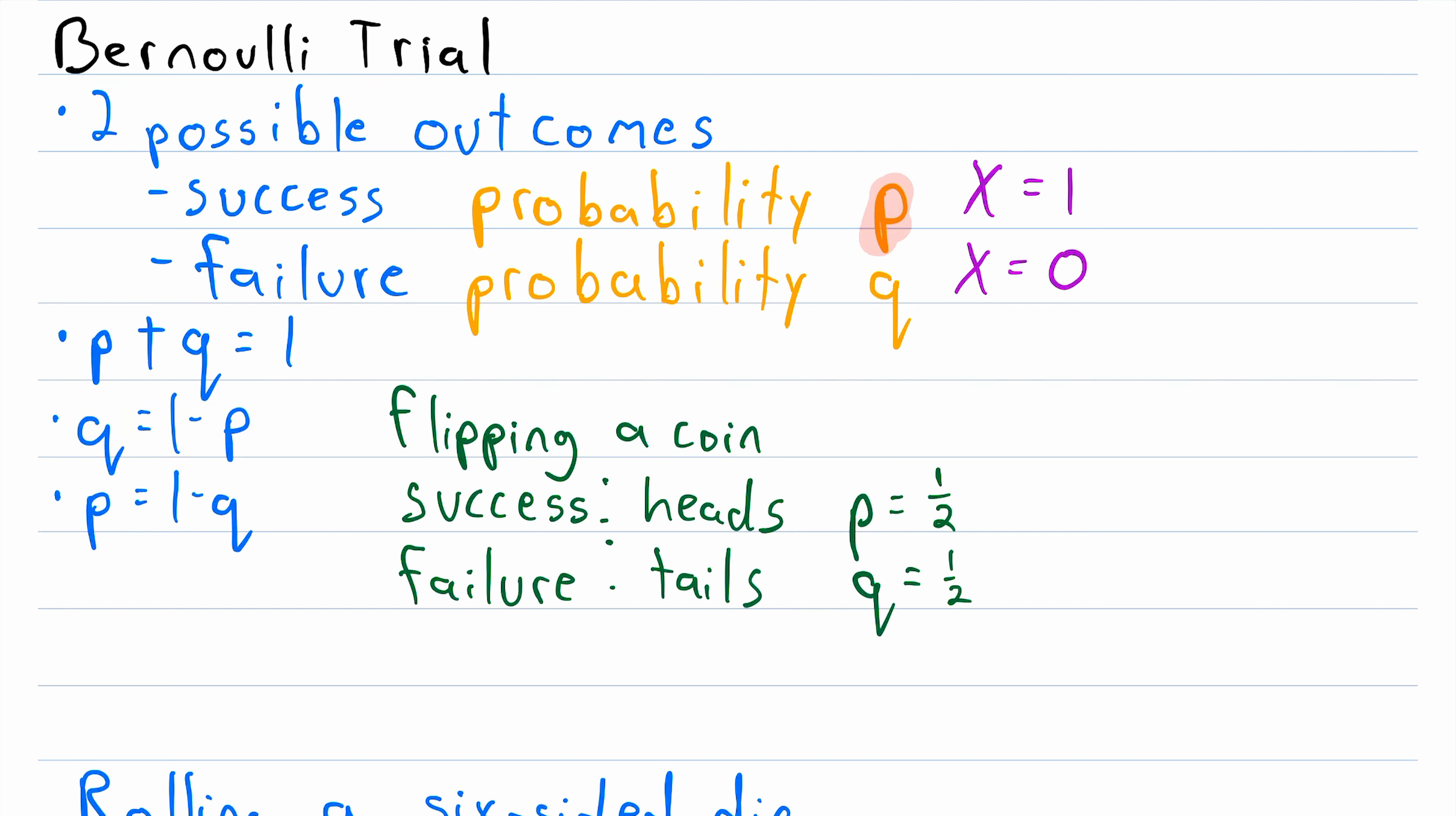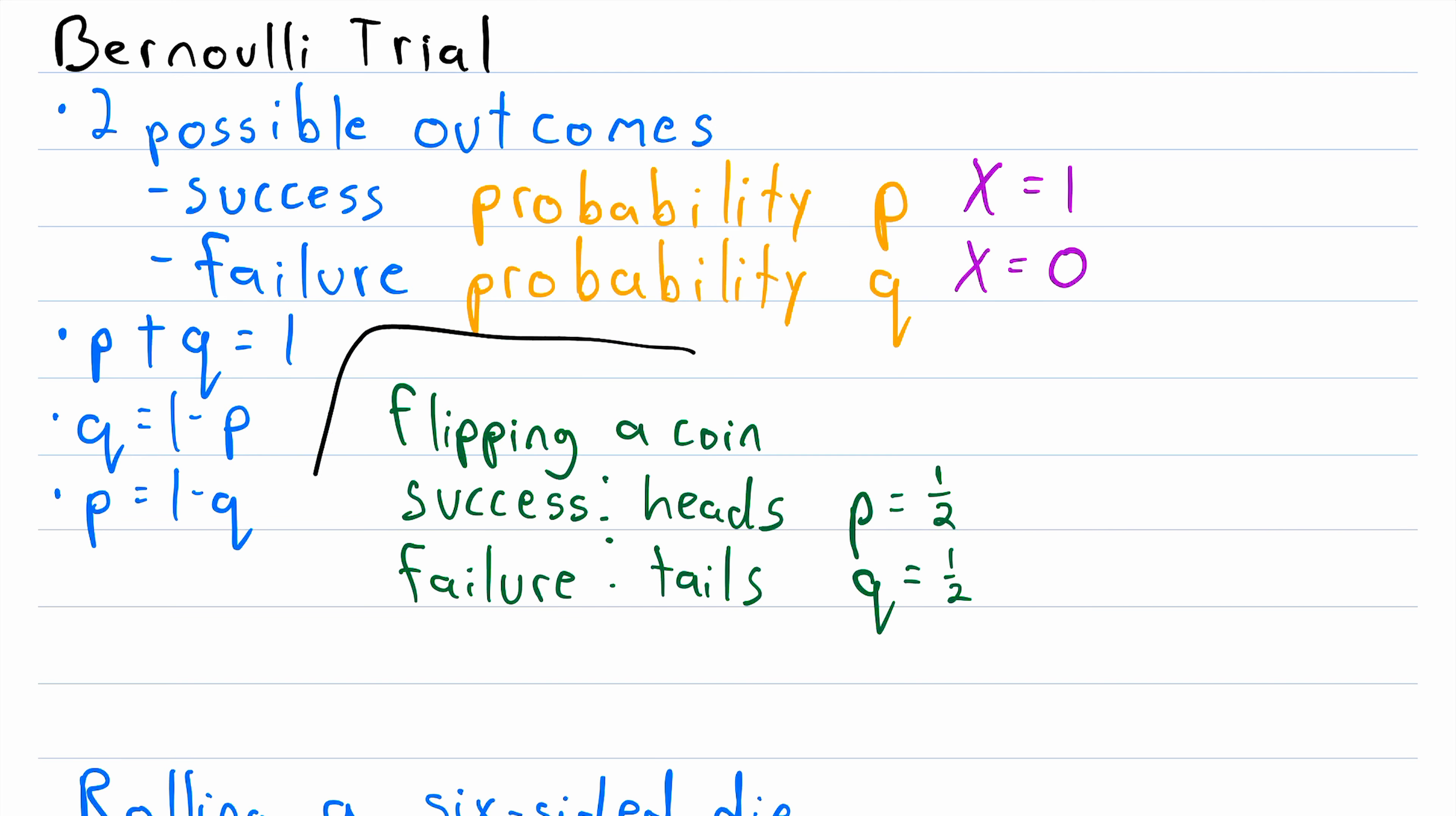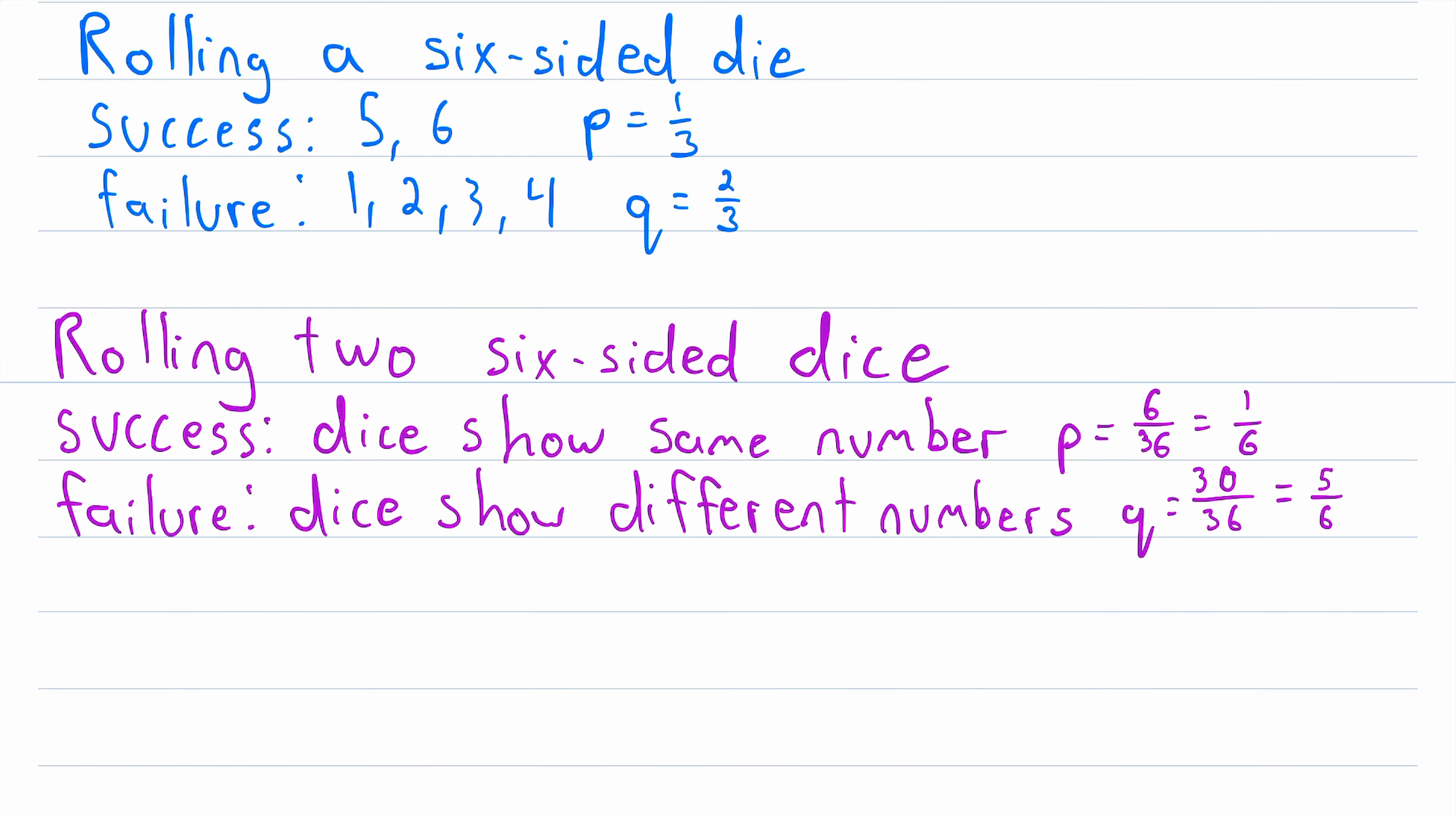So if you're trying to find p and q, you only have to think to find one, and then finding the other one is a breeze. And remember, a few examples of Bernoulli trials are flipping a coin, and then a couple more interesting examples involve rolling dice. And remember that there can be multiple ways for a success to occur, and there can be multiple ways for a failure to occur. Rolling a six-sided die does have six possible outcomes, but this example of a Bernoulli trial boils those six outcomes down to only two. A success, five or six, and a failure, one, two, three, or four.